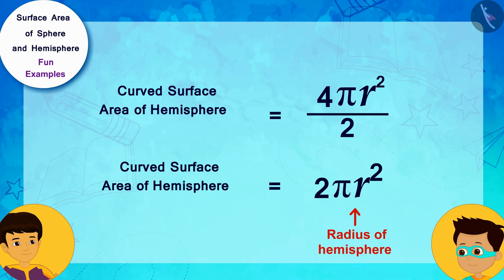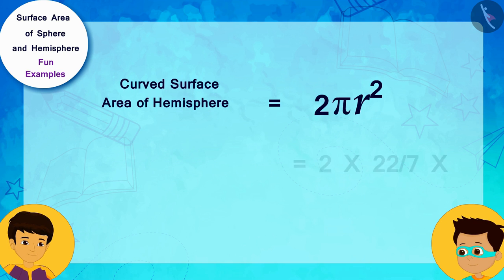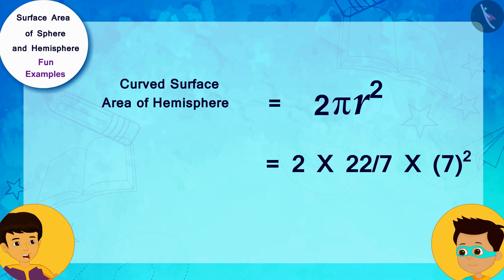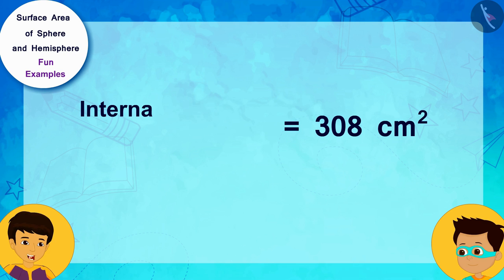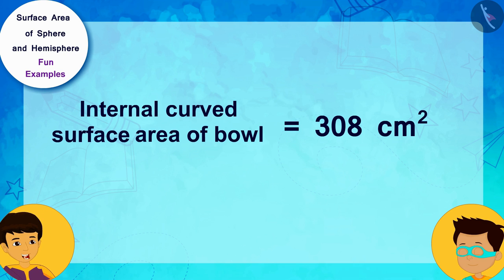Oh, yes! Thanks, Thomas! Let's solve this by writing the radius of the bowl 7 centimeters instead of r. The internal curved surface area of the bowl is 308 square centimeters.